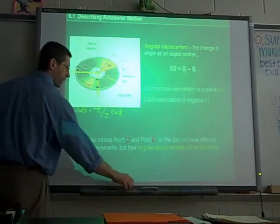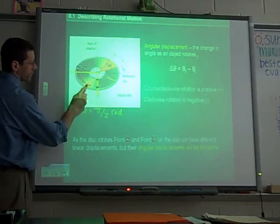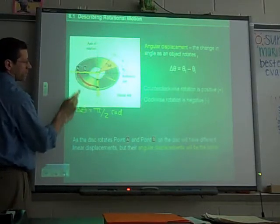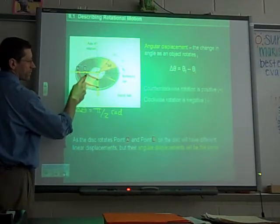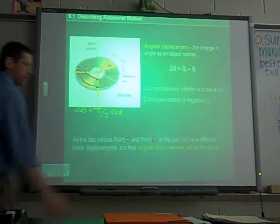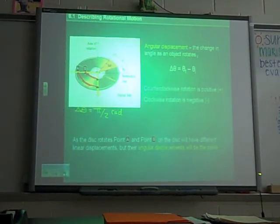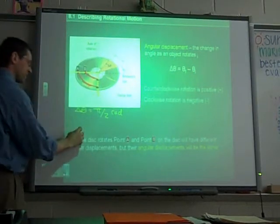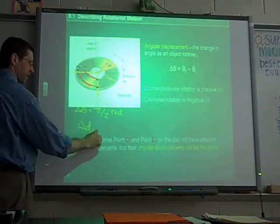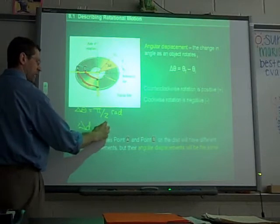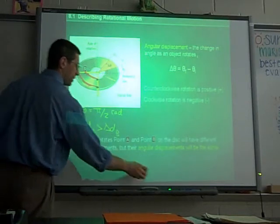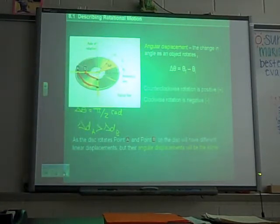And it's positive because it's counter-clockwise. However, A went from here to here, and B went from here to here. So who had the greater linear displacement? A, right? A's line's longer. So you would say that delta D for A was greater than delta D for B. Now, in a couple slides, we'll actually figure out what that distance was.